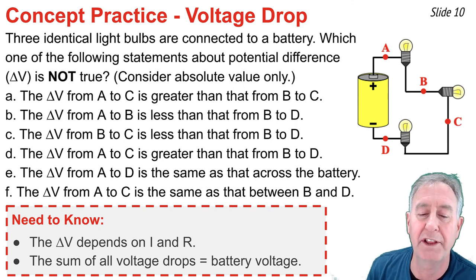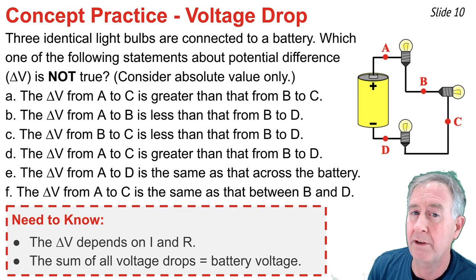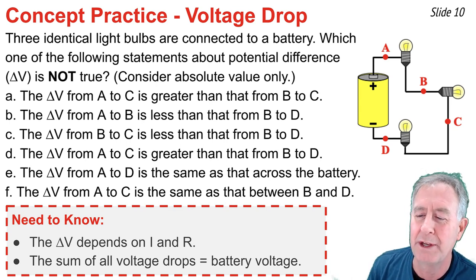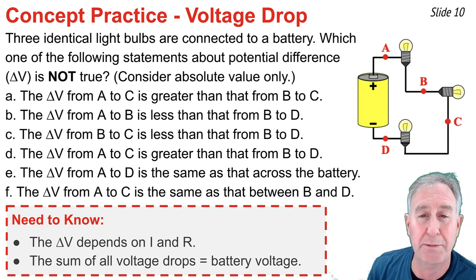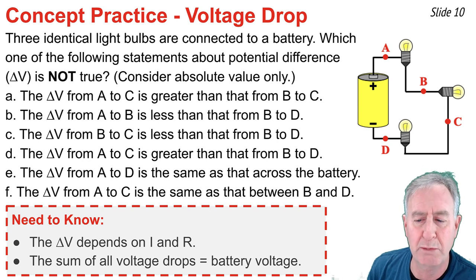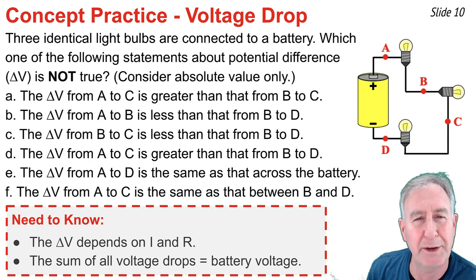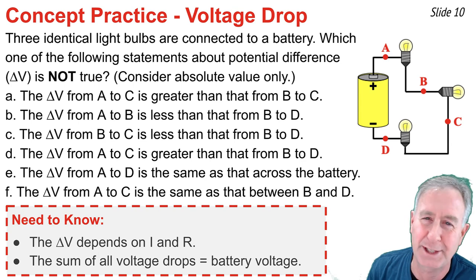So we know the answer is D, but let's confirm E and F. Statement E — delta V from A to D, the sum of all three bulbs' voltage drops, equals the change in delta V across the battery — is true. Statement F — delta V from A to C (two bulbs) is the same as from B to D (also two bulbs) — is true. So the false statement is D.